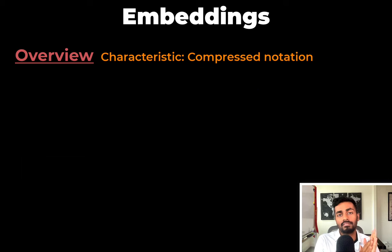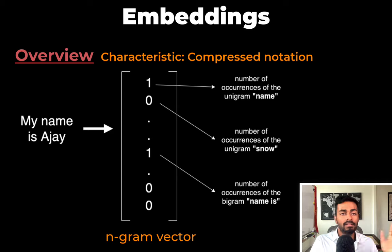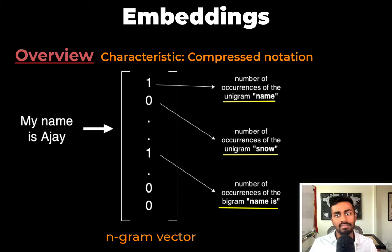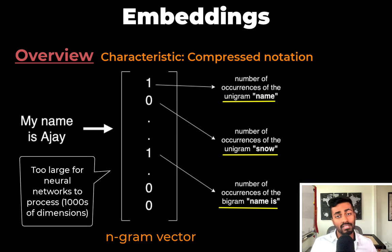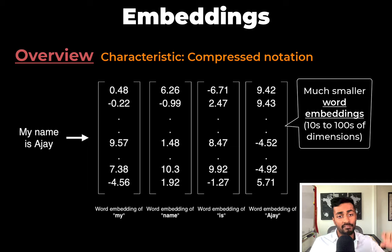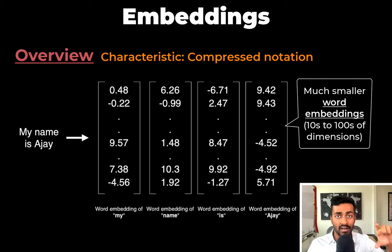The next characteristic is that embeddings offer a compressed notation. Sentences are represented by n-gram vectors — large vectors where each unit represents the presence and counts of a specific n-gram in the input. These vectors are very large and cannot be processed by computers with reasonable memory and CPU resources. Hence, a fixed-size word representation called embeddings becomes useful.